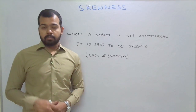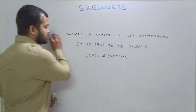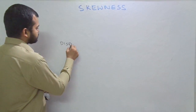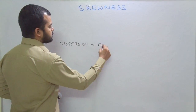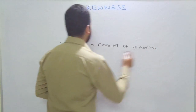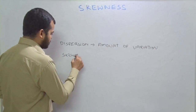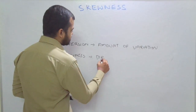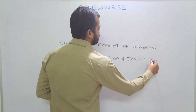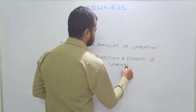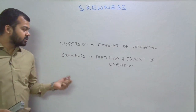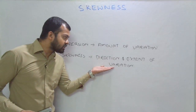We consider the difference between skewness and dispersion. Dispersion shows the amount of variation. Skewness shows the direction and the extent of that variation. So the clear cut difference between these two is that dispersion — which we discussed in the previous videos — shows the amount of variation, while skewness shows the direction and the extent of variation.